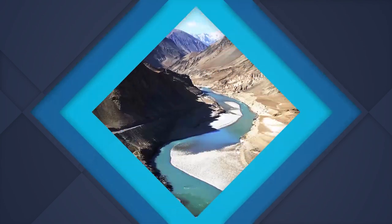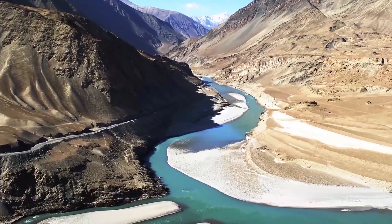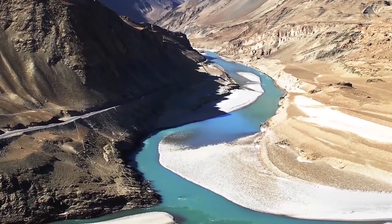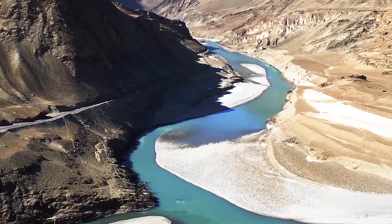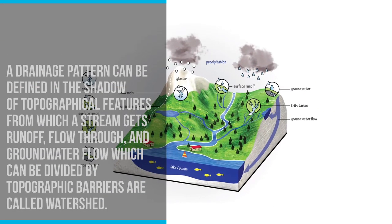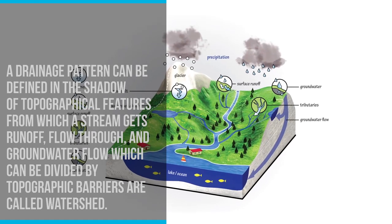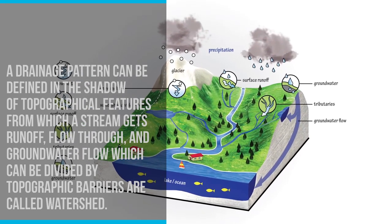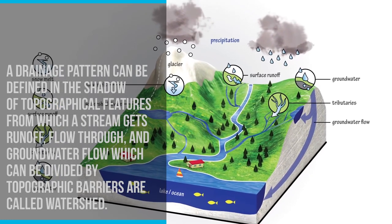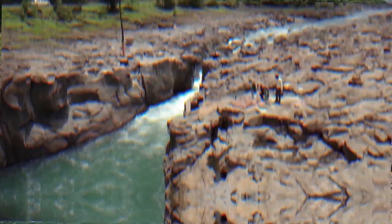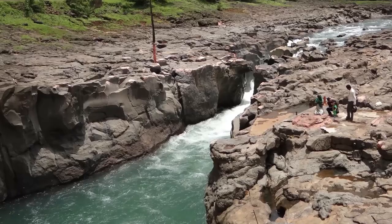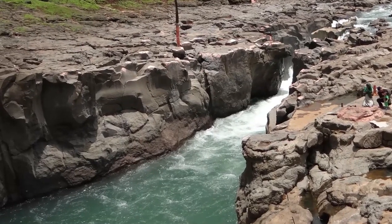The drainage pattern of an area is basically the outcome of the geological time period, nature, as well as the structure of rocks, topographic slope, etc. A drainage pattern can be defined in the shadow of topographical features from which a stream gets runoff, flows through, and groundwater flow. Areas divided by topographic barriers are called watersheds. A watershed includes all stream tributaries that flow to some location along the stream channel.